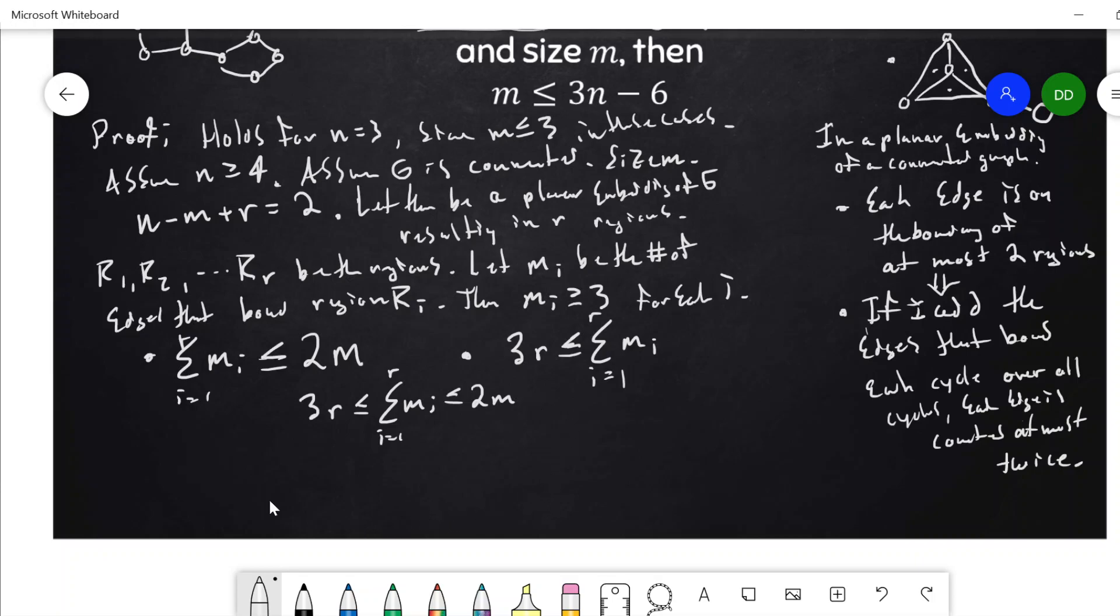All right, so here's where we get a little bit clever. If I take three times the Euler identity, so take this whole thing and multiply it by three, this would tell me that six is equal to three n minus three m plus three r.